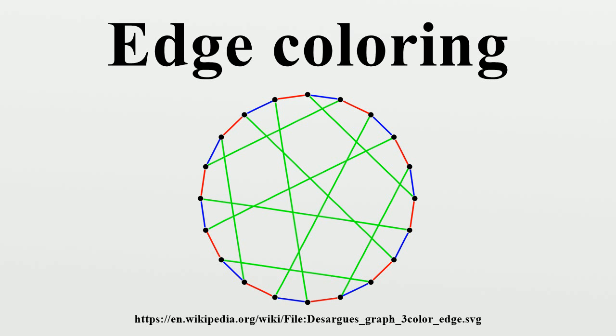By Vizing's theorem, the number of colors needed to edge color a simple graph is either its maximum degree delta or delta plus 1.